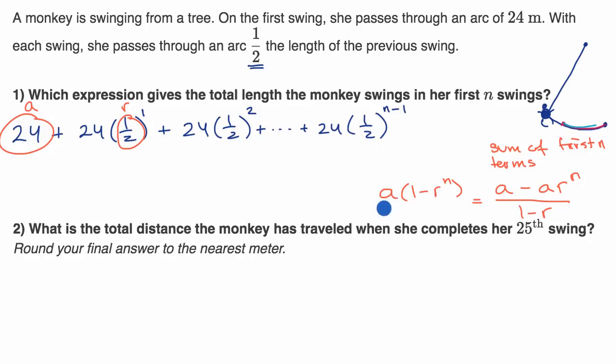But now let's use this. So this is going to be equal to, actually I'll use this second form right over here. So our first term A is 24, so we're going to have 24, times one minus our common ratio, which is one half, to the Nth power, well we're talking about the first N swing, so I'm just going to leave an N right over there. All of that over one minus our common ratio. One minus one half.